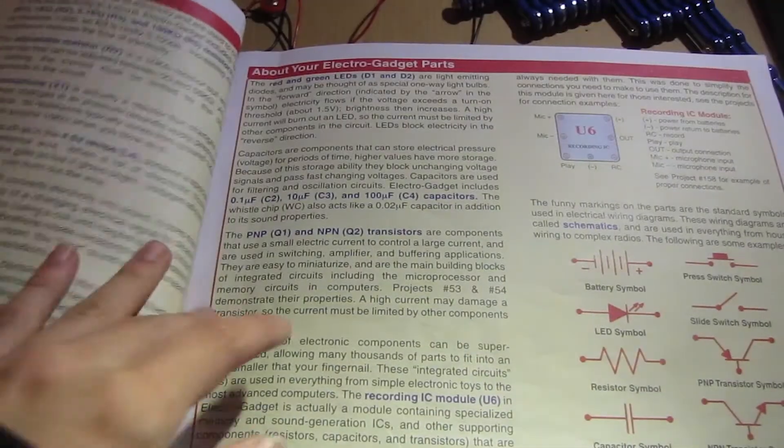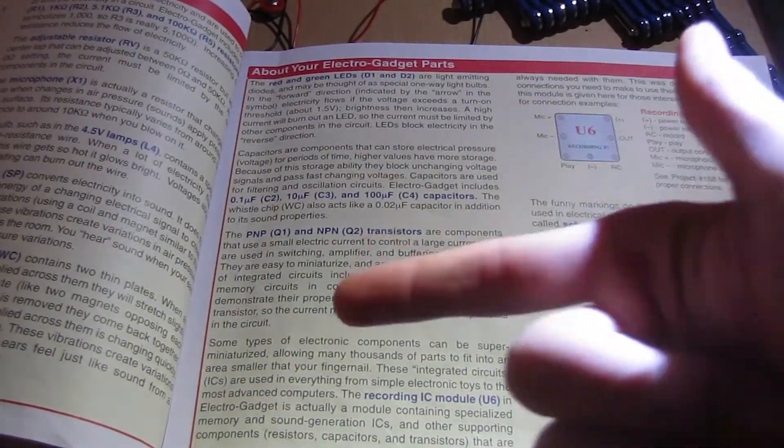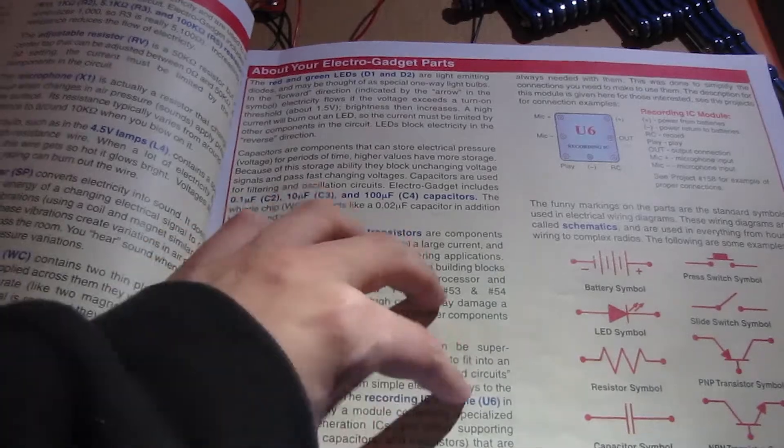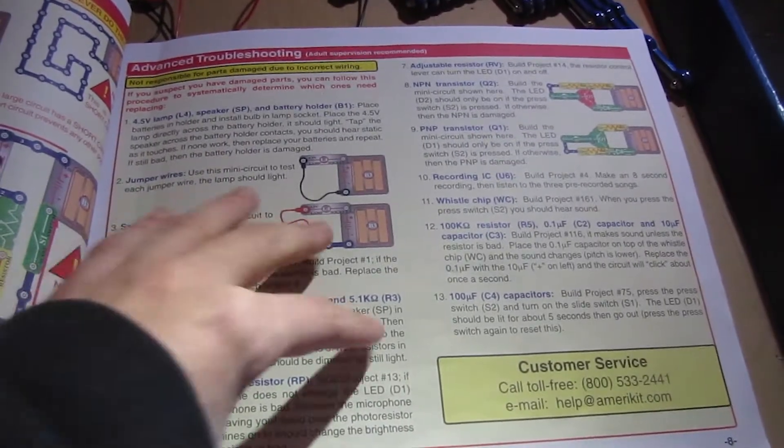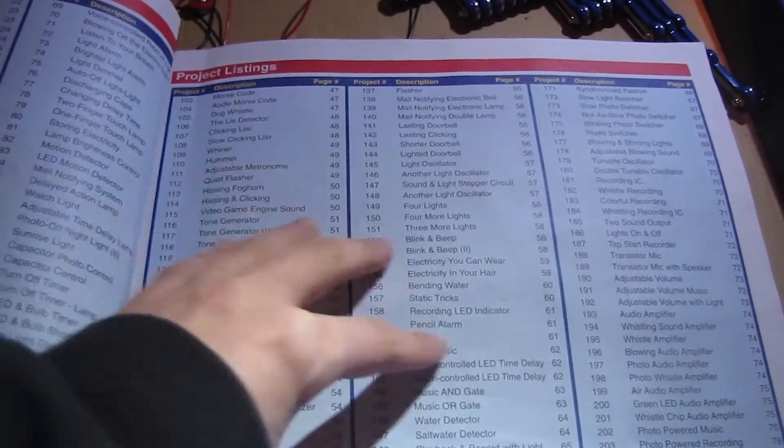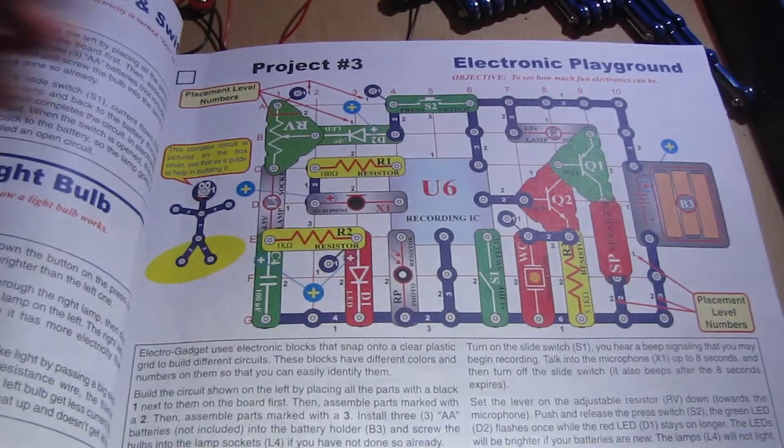And then, of course, we got information about the parts, which we'll discuss in the parts video once we get that out. And of course, we got more warnings here, do's and don'ts of building circuits, and then we got the advanced troubleshooting procedure here. And of course, we got our projects listings. And then after that, we get straight into the projects.